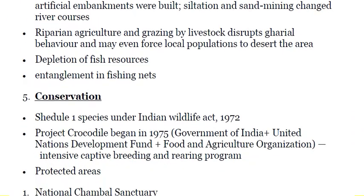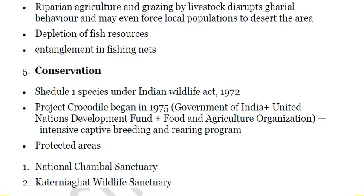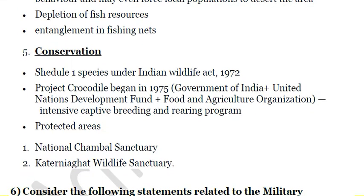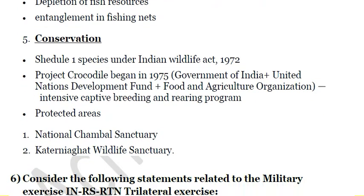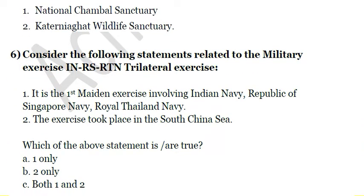For conservation, Gharial is listed on Schedule 1 of the Indian Wildlife Protection Act 1972. Project Crocodile began in 1975 as a joint program between the Government of India, the United Nations Development Programme, and the Food and Agriculture Organization, aiming to protect the species through intensive captive breeding and rearing programs. Protected areas include the National Chambal Sanctuary and the Katerniaghat Wildlife Sanctuary.